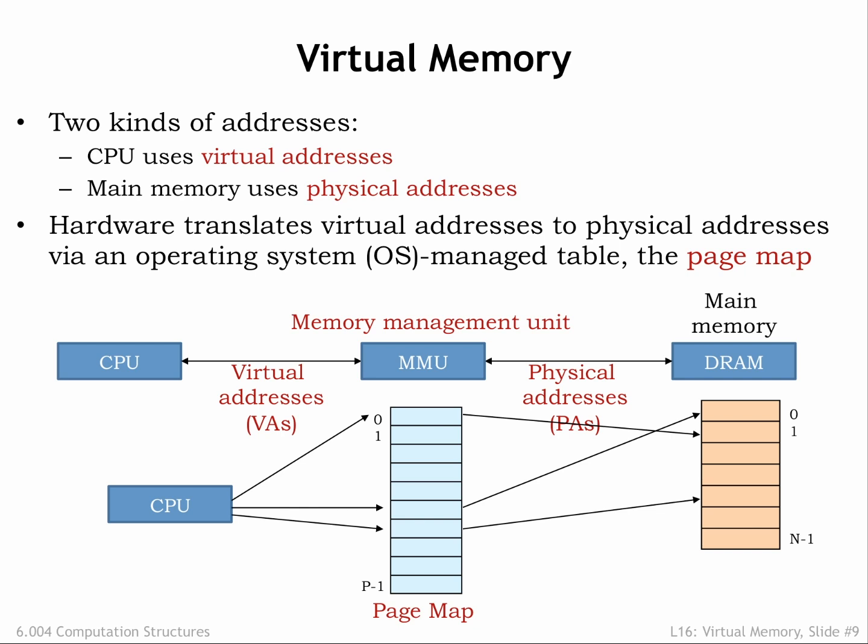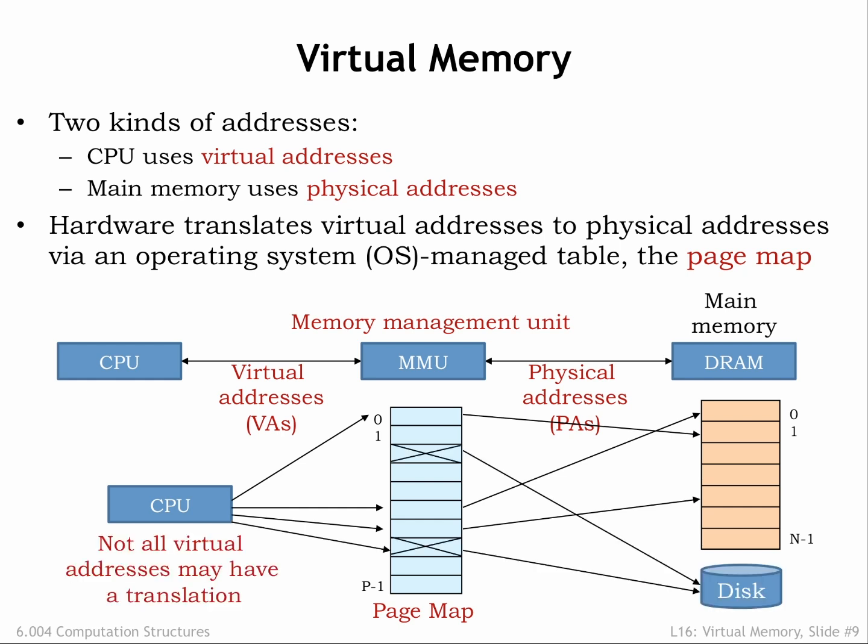This table is called the page map or page table. Conceptually, the MMU uses the virtual address as an index to select an entry in the table which tells us the corresponding physical address. The table allows a particular virtual address to be found anywhere in main memory. In normal operation we'd want to ensure that two virtual addresses don't map to the same physical address. But it would be OK if some of the virtual addresses did not have a translation to a physical address, which would indicate that the contents of the requested virtual address haven't yet been loaded into main memory.